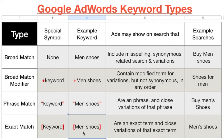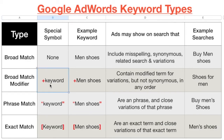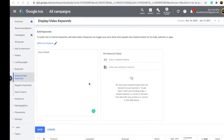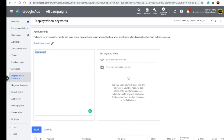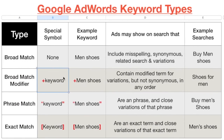Now, for broad match modifier, you add a plus sign in front of your keyword. So for example, writing '+man +shoes' makes it a broad match modifier keyword. To summarize: to make a keyword exact match, add square brackets; to make it broad match modifier, add a plus symbol in front.